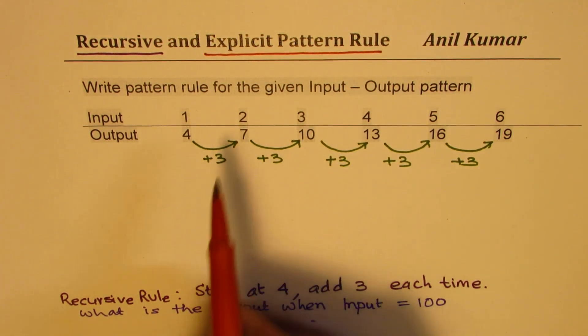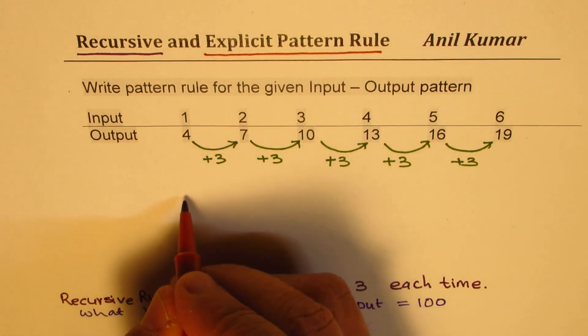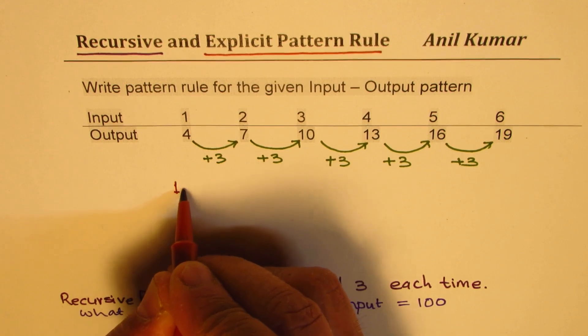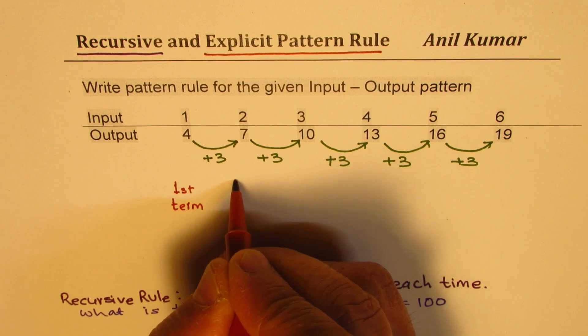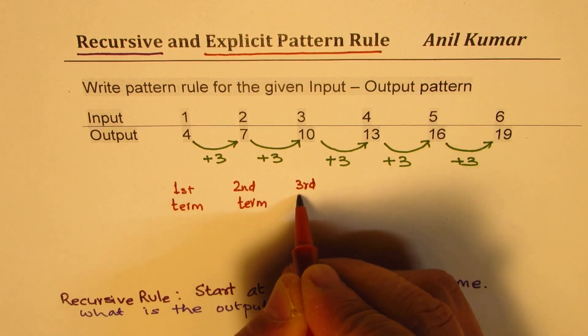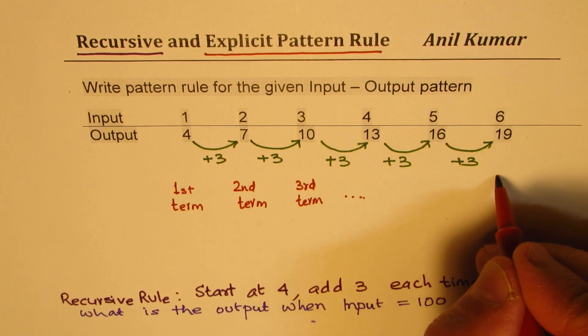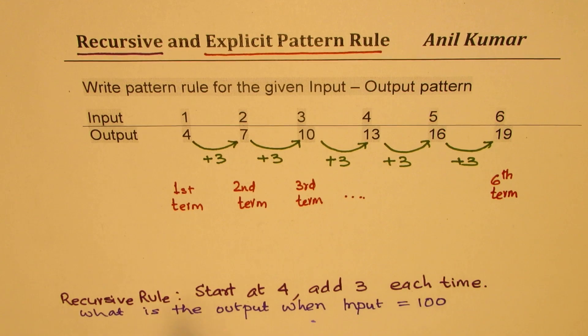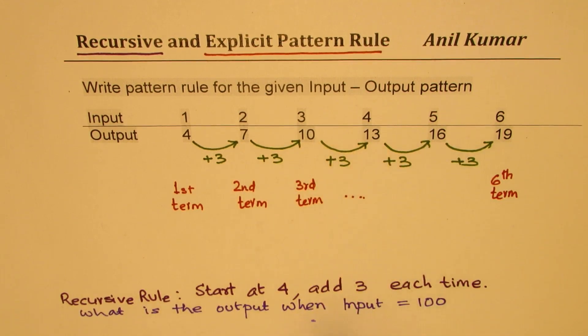Now let me define a few terms. We'll say when input is 1, 2, 3, 4, we'll call this as our first term. We'll call the next one as our second term, third term and so on. So this becomes sixth term. So every number is given the term number. So this is the first, second, third, fourth, fifth and so on.